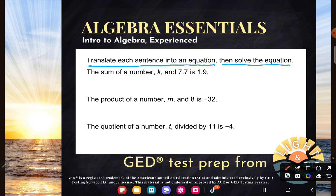First one. The sum of a number K and 7.7 is 1.9. All right. The sum of a number K and 7.7. Let's start with that part.